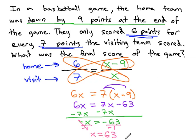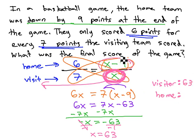Be careful with this number that we make sure we know what it represents. x, we said, was the visiting team score. The visitors have 63 points. The home team is x minus 9. 63 minus 9 is 54. The home team lost by a score of 63 to 54.